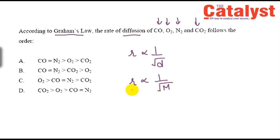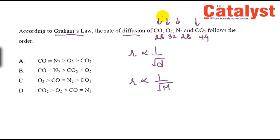A higher molar mass means a lower rate of diffusion. Molar masses: carbon monoxide is 28, oxygen is 32, nitrogen is 28, and CO2 is 44. So CO and N2 both have equal and highest diffusion rates.